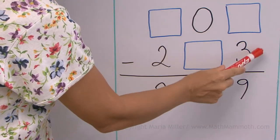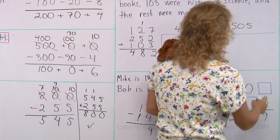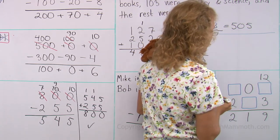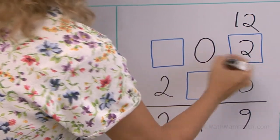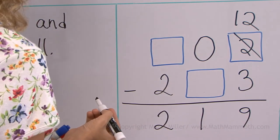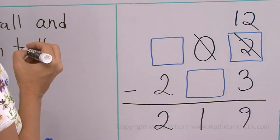Some number minus 3 leaves 9. That must be 12. But 12 doesn't go here. 12 is after you have regrouped, you have gotten 12 here. So, there must be 2 here. But, you know, it got crossed out. And then there's 0 here. So, it surely got crossed out.